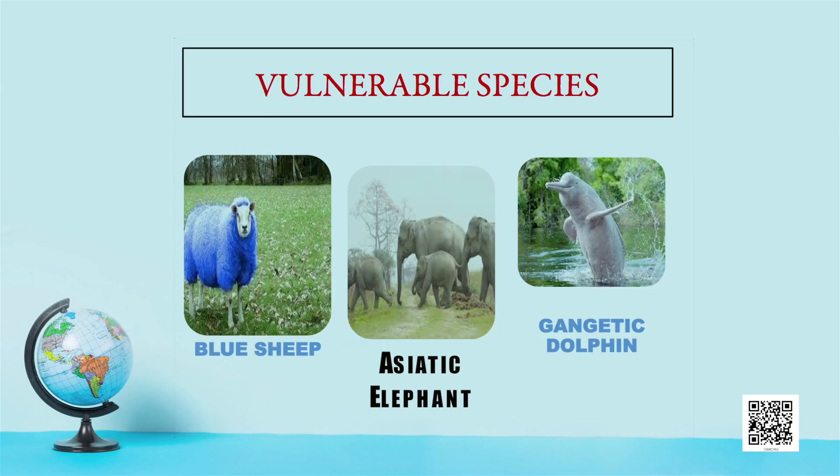Vulnerable species are those exposed to the possibility of being attacked or harmed, needing additional support, care, and protection due to neglect or risk. A vulnerable species is likely to become endangered under prevailing circumstances and faces a high risk of extinction in the wild. In India, examples of vulnerable species include the blue sheep, Asiatic elephant, and Gangetic dolphin.